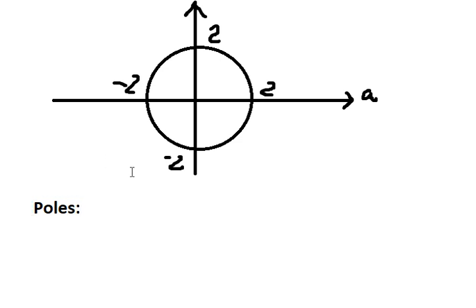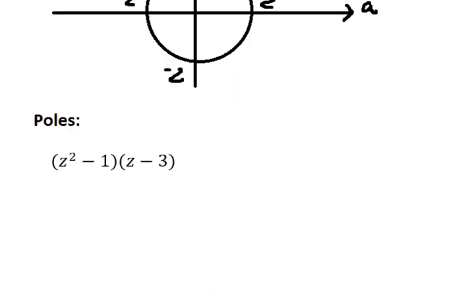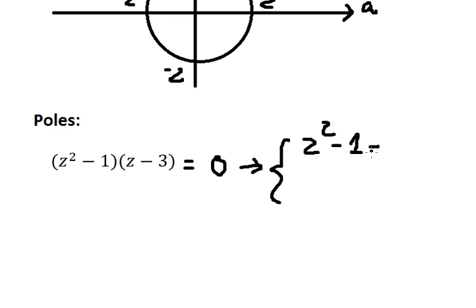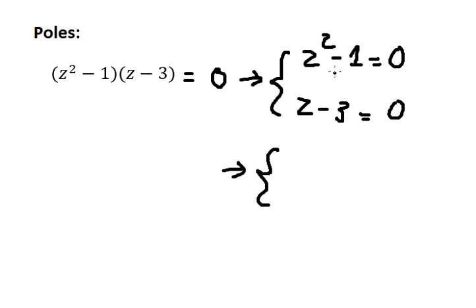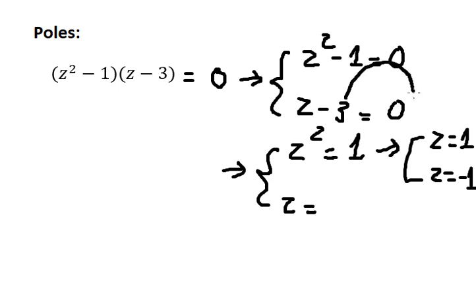To find the poles of this function we need to consider the denominator and set it equal to zero. So we put negative one on the right side, and z equals negative one. And for the last one we put negative three, giving us z equals positive three.